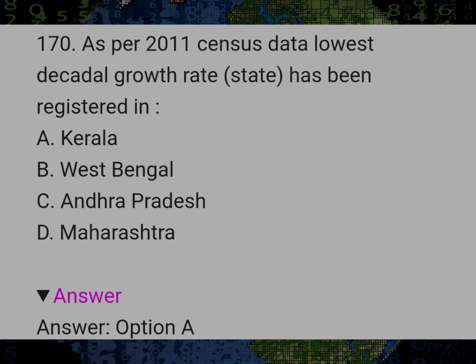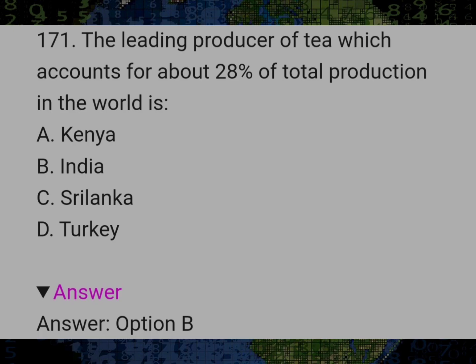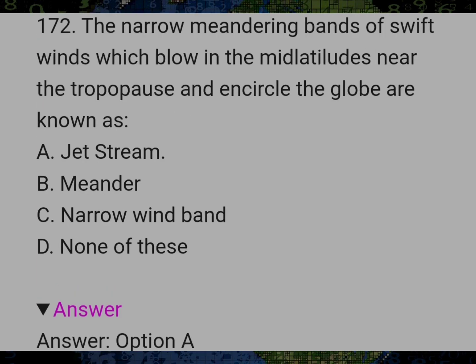As per 2011 census data, lowest decadal growth rate state has been registered in? Answer A: Kerala. The leading producer of tea which accounts for about 28% of total production in the world is? Answer B: India. The narrow meandering bands of swift winds which blow in the mid latitudes near the tropopause and encircle the globe are known as? Answer A: Dead stream.